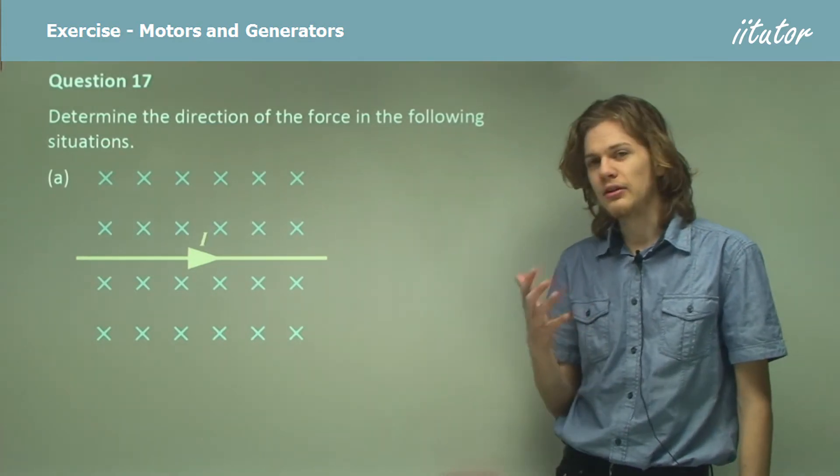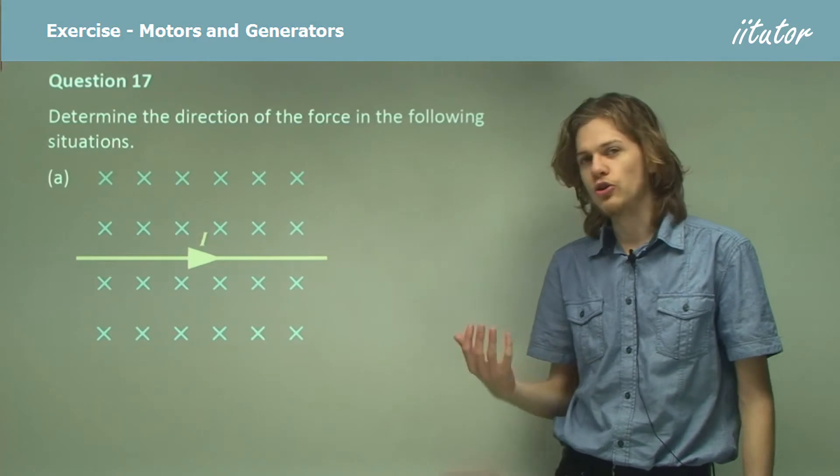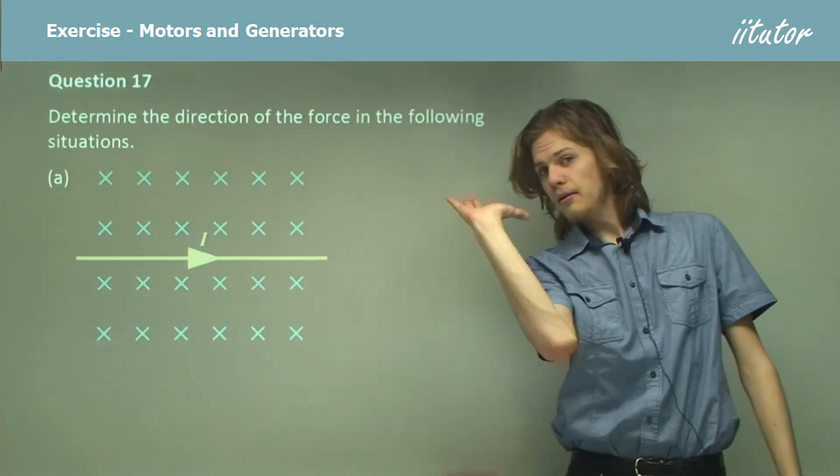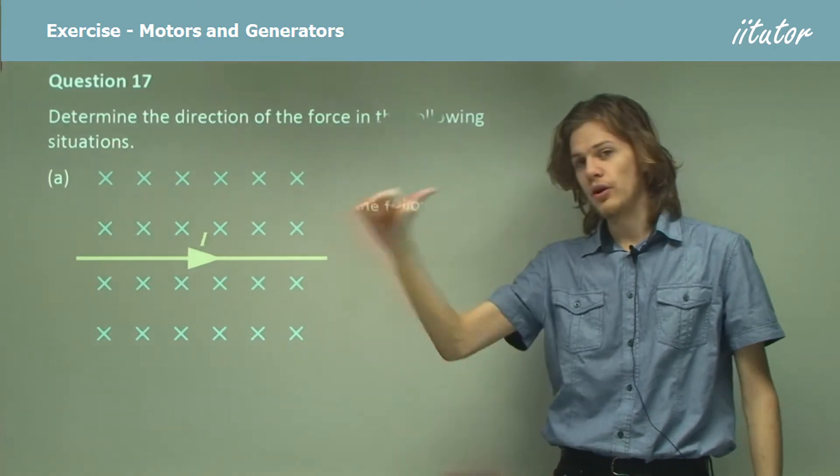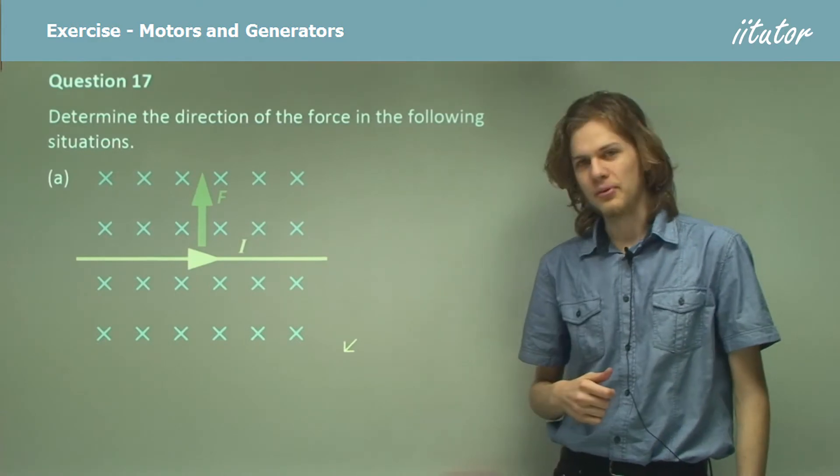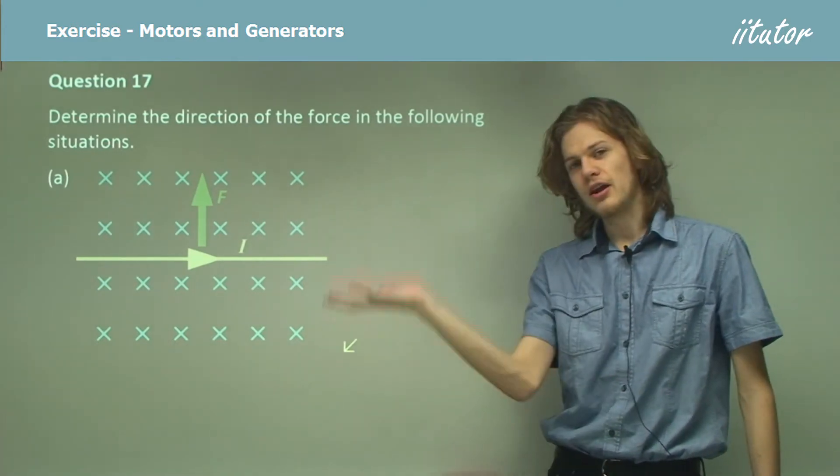So the blue X's represent a magnetic field, and we can see that it's going this way. So if we put our hand like that, so the field is going that way and the current is going that way, we can see that the force produced will be up. That's the direction that our palm points.